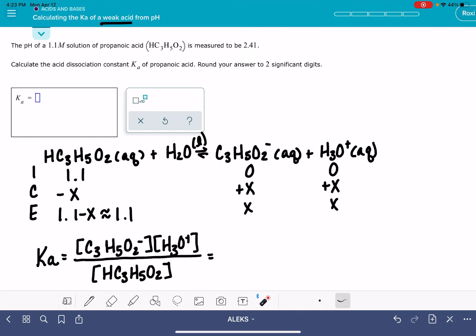Now, from our ICE table, these are the values that we have. We know that at equilibrium, we have X of each one of our products, so X for these guys right here, and we have 1.1 of our reactant, HC3H5O2. So all we need to do is figure out what the value of X is, and then we've got this problem solved.